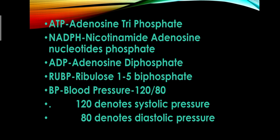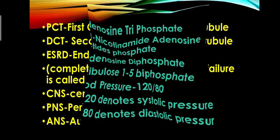The full form of RUBP is ribulose 1,5-biphosphate. Next, BP is blood pressure. The adult normal blood pressure is 120/80, where 120 denotes systolic pressure and 80 denotes diastolic pressure.